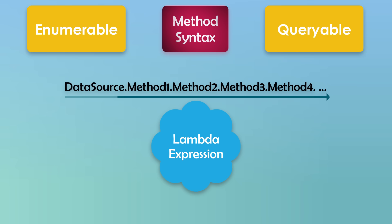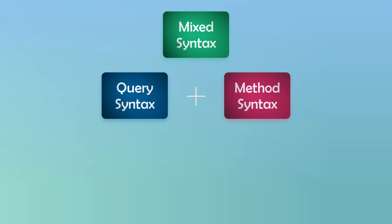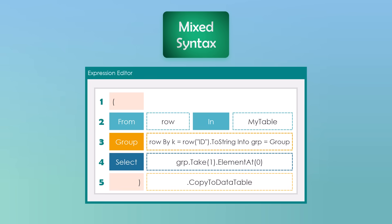The third way is mixed syntax. As the name suggests, it's a mix of both ways — query and method syntaxes. We use both clauses and methods to write a LINQ query. For example, the following query uses clauses from, group by, and select, as well as methods take, element at, and copy to data table. So we have clauses and methods in one query. This is how a query looks in mixed syntax, and in this way we can write a complex query in a readable format. By the way, this query is to remove duplicates from a data table based on one column called ID.